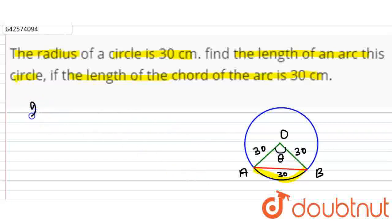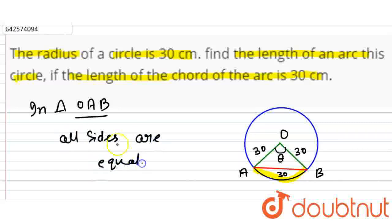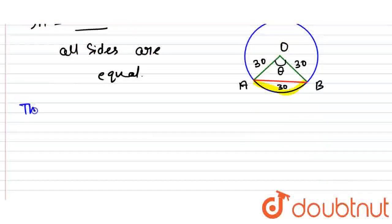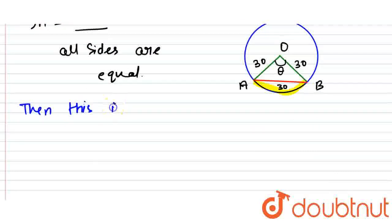Now, in triangle OAB, all sides are equal. So, this is an equilateral triangle. If all sides are equal, then this is an equilateral triangle.